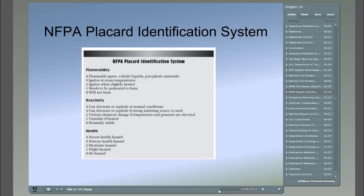Under the health category: a 4 is a severe health hazard. A 3 is a serious health hazard. A 2 is a moderate health hazard. A 1 is a slight hazard. And a 0 is no hazard at all.